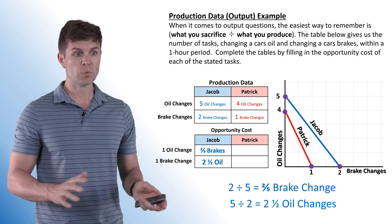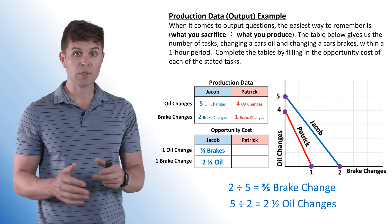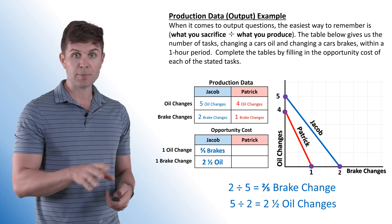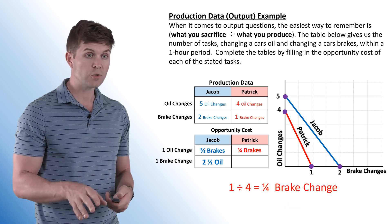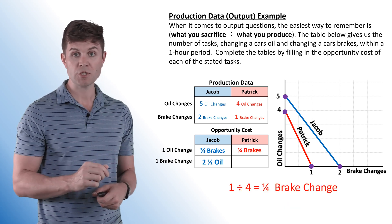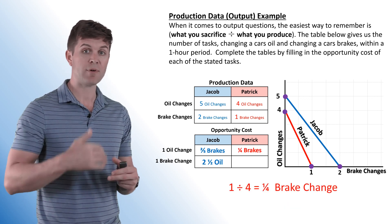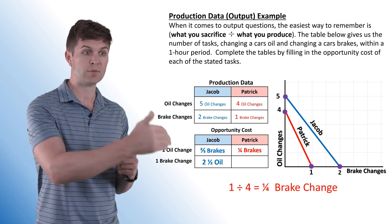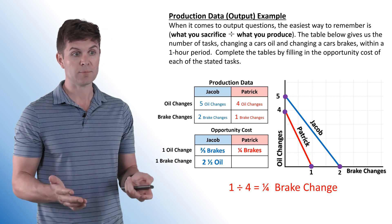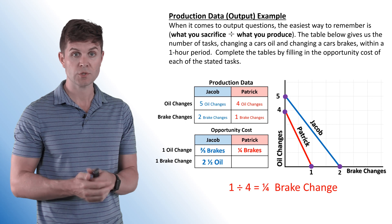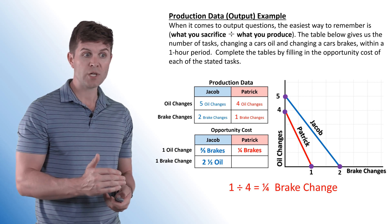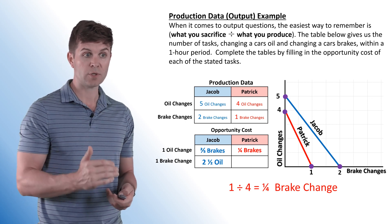That gives us Jacob's opportunity costs. Now to get the opportunity cost for Patrick, we do the same thing. To get the opportunity cost of an oil change, we take the one brake change he could do in that time divided by the four oil changes — what we sacrifice divided by what we produce — and it comes out to one quarter of a brake change.